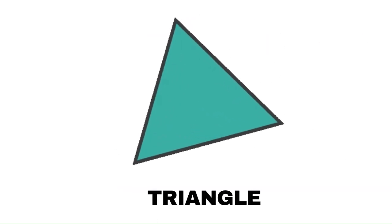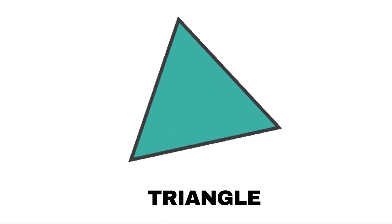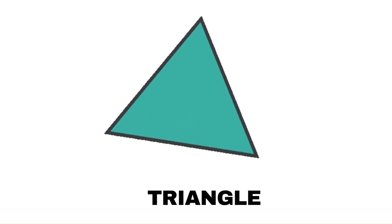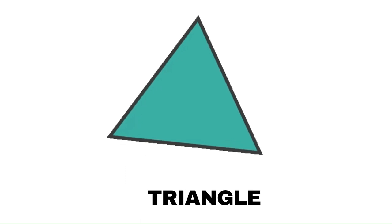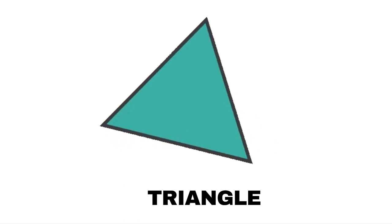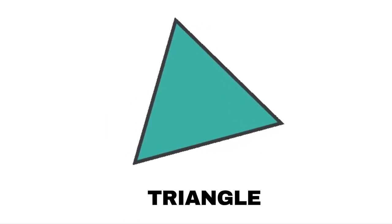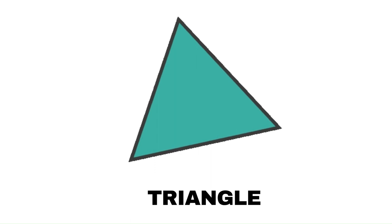A triangle is a closed 2D shape which has 3 sides and 3 corners. A triangle is formed when 3 lines meet.